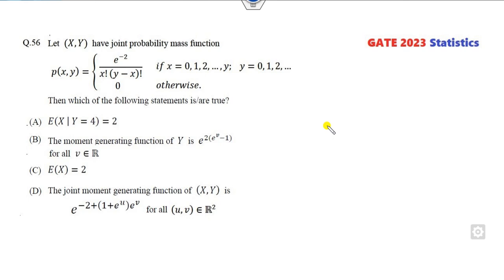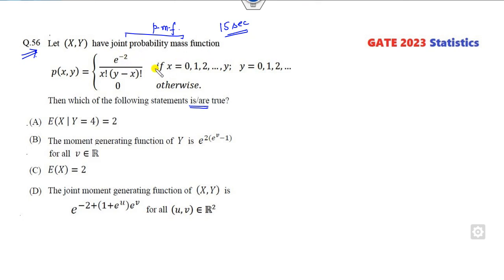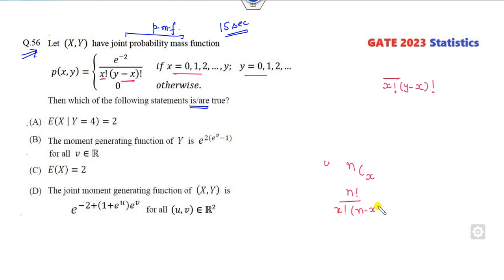Remember, as I told you many times, you have to read the statement very carefully. It is given that it is a probability mass function and the question asks which of the following is or are true — more than one correct option. Think about any discrete probability mass function which relates with the factorial. Any PMF involving x factorial and y minus x factorial — yes, this is the NCx form: n factorial over x factorial times n minus x factorial, which is a binomial kind.